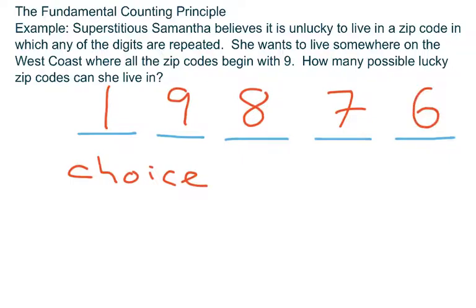Now the fundamental counting principle says the number of ways in which a sequence of choices can be made is found by multiplying the number of ways each individual choice can be made. So the total number of possible zip codes that would meet Samantha's demands would be found by multiplying one by nine by eight by seven by six, multiplying all those numbers together.